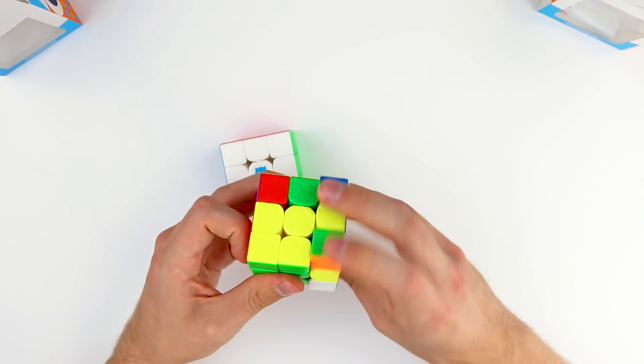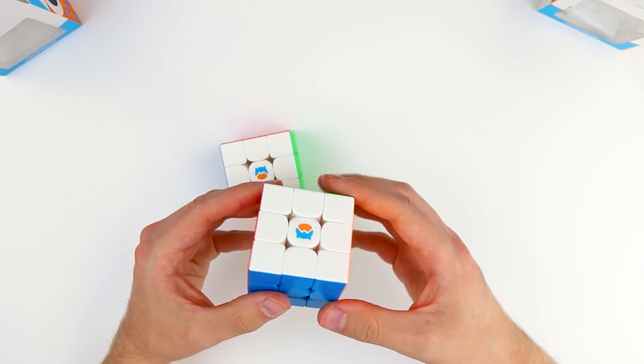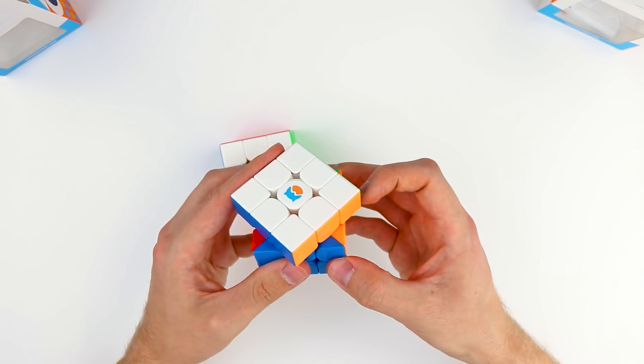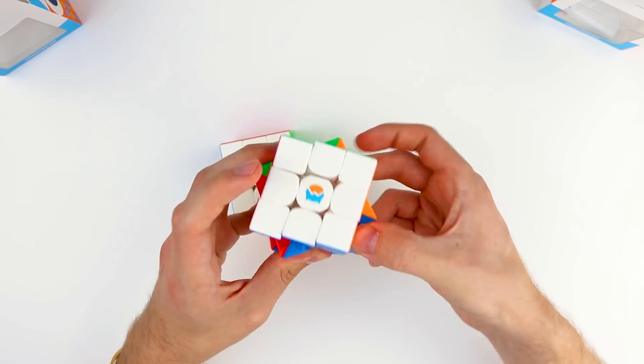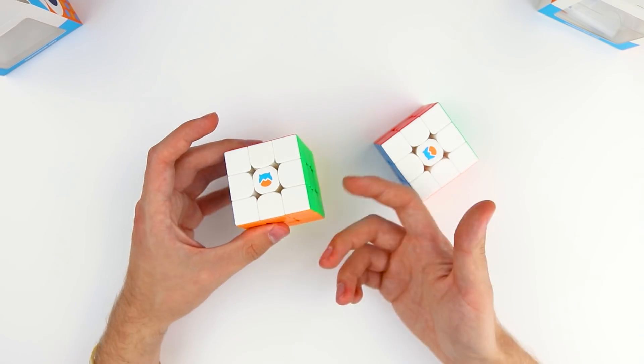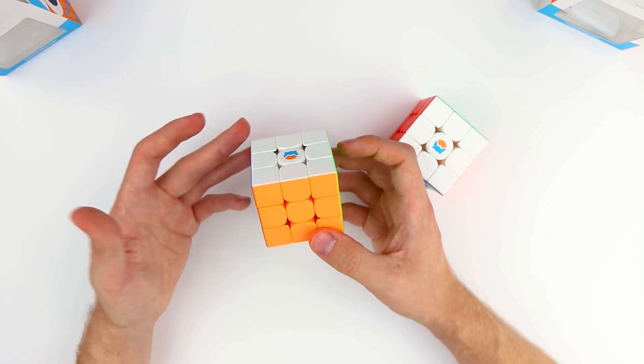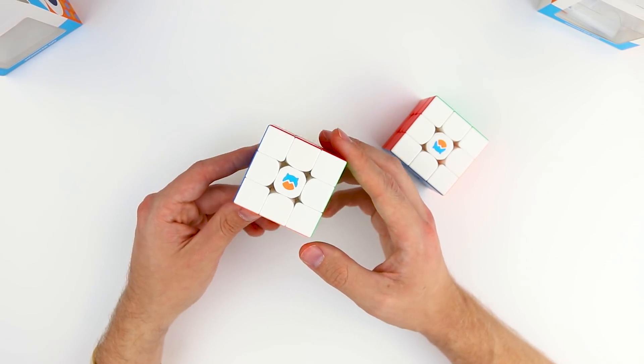Again, turning is really nice, so not much more to say about this one. Corner cutting is good. Like I always say with corner cutting, if you can't corner cut 45 degrees, it's like you shouldn't be releasing a 3x3 at this point in time.